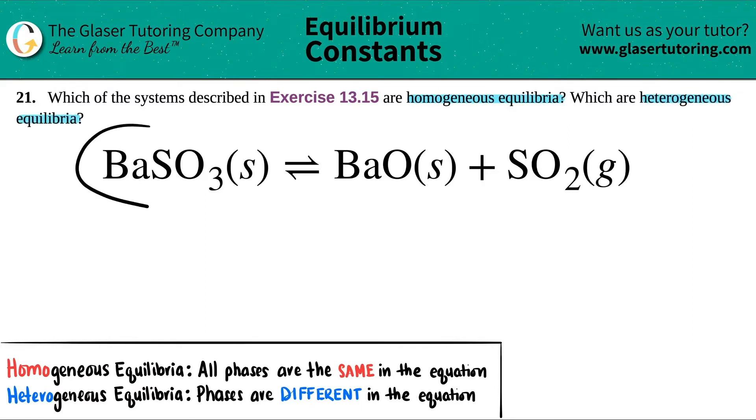So I pulled up one of the balanced equations. In this case, we have to figure out if BaSO3 solid, which comes to equilibrium with BaO solid plus SO2 gas, if this is either a homogeneous equilibrium or a heterogeneous equilibrium.